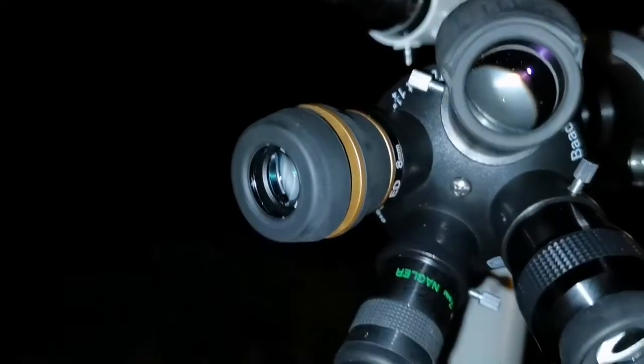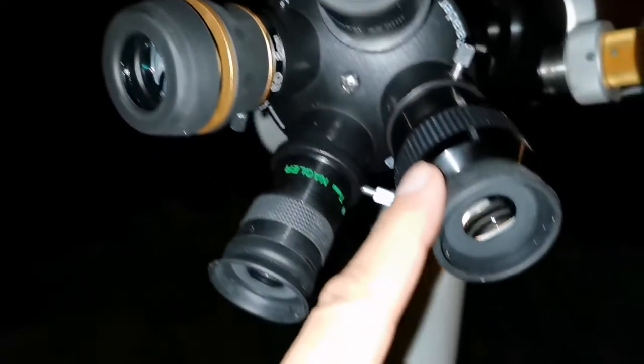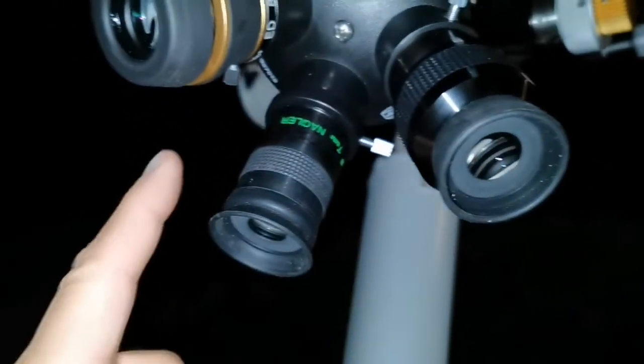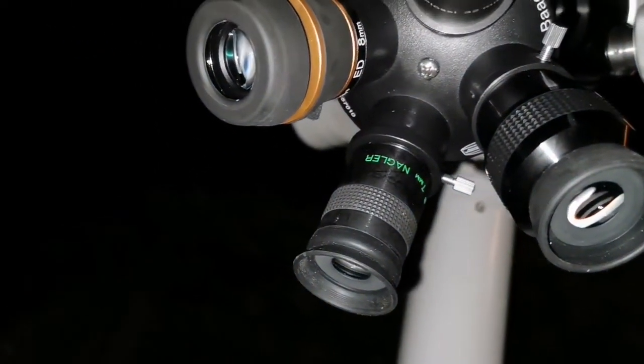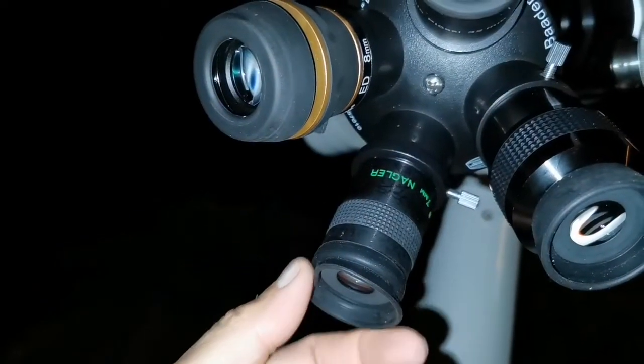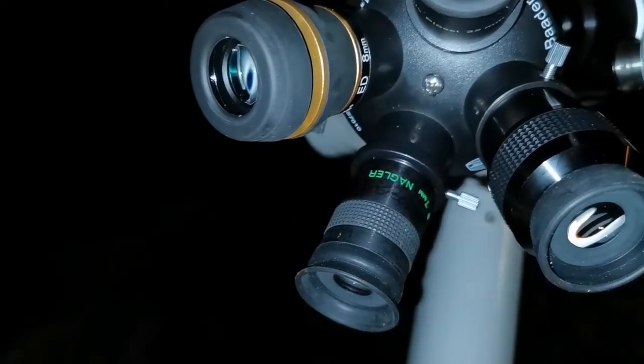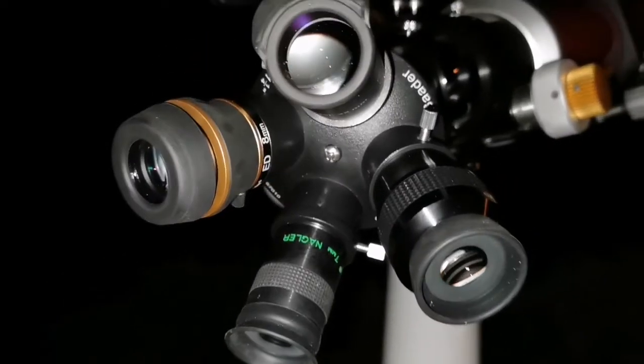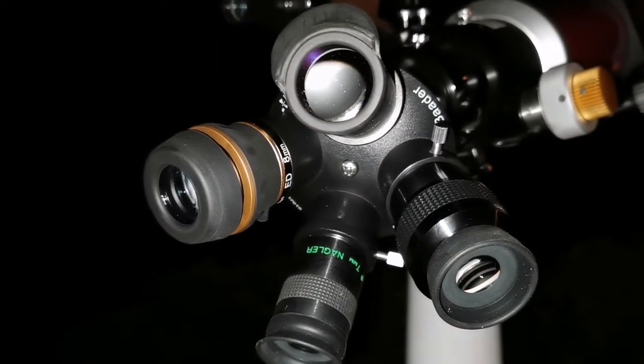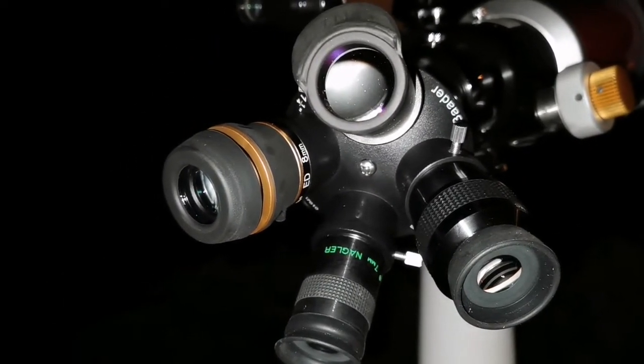In this one is clear. Then second in the Skywatcher 7mm and then Teleview Nagler 7mm original. This is a type one you may call it, but this is the original one. So let me bring the Skywatcher 4mm.